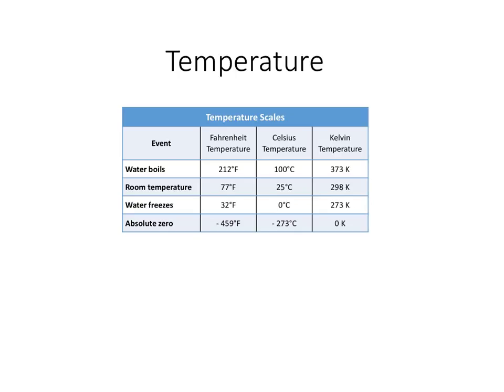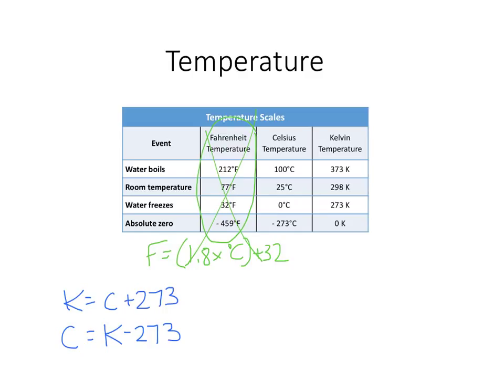We're going to talk about temperature units or temperature scales. So first of all, we have Fahrenheit, which is what we use here in America, and you will not be seeing in anything that we do in science class. If you're curious to get to Fahrenheit, it's 1.8 times degrees Celsius plus 32, but it is not something that you will ever be asked to do in this class. What you will be asked to do is Celsius to Kelvin and back and forth. So remember that Kelvin is equal to Celsius plus 273, and Celsius is equal to Kelvin minus 273.